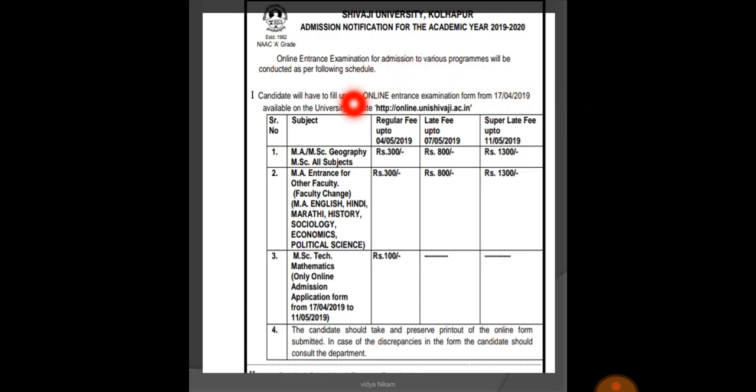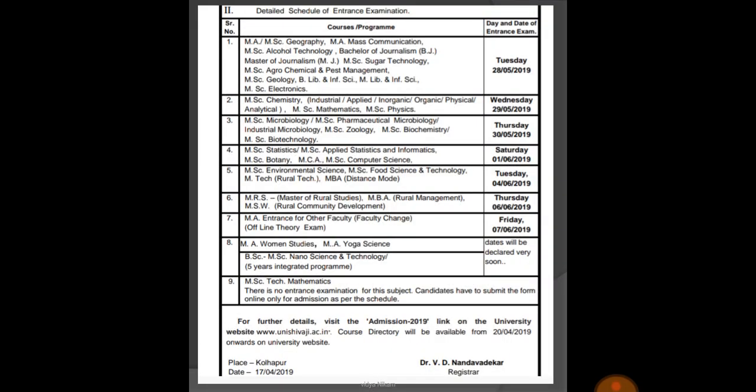The website is http://online.unishivaji.ac.in. MSc entrance exam for chemistry subject will be held on 29th of May. You can apply for more than one course separately. For example, if you are BSc chemistry student, then you can apply for MSc chemistry as well as MSc biochemistry, MSc environmental chemistry, and MSc in agrochemical and waste management. But you should fill up the entrance form for each course separately.